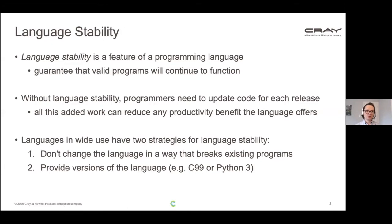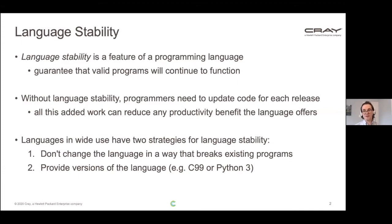If a language doesn't offer language stability, then programmers need to update their code every time the language is released or a new compiler comes out or anything like that. That added work could reduce any productivity benefit that the language is providing. Generally speaking, the languages in wide use use two different strategies for language stability: one is just don't change the language in a way that breaks existing programs, and the second is to provide versions of the language that people can opt into using.